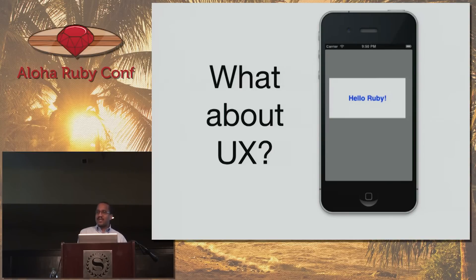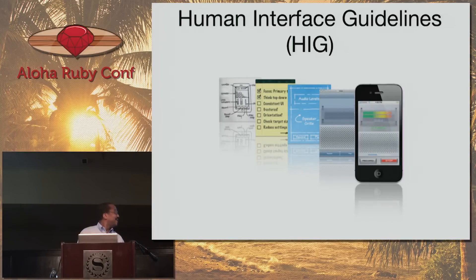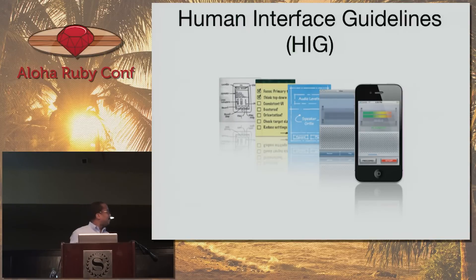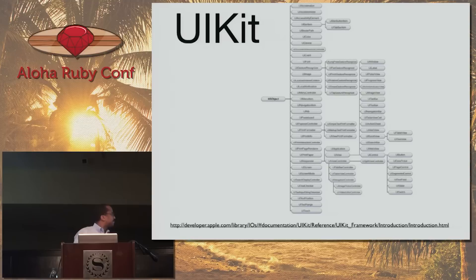If you're going to do user experience, there are two things you need. One, you need a designer who really understands design, and that designer needs to work with Apple's Human Interface Guidelines, or the HIG. You'll hear people in the Apple world referring to the HIG. It's a set of things that Apple has decided we should do in order to be more effective designers and to create more effective apps.